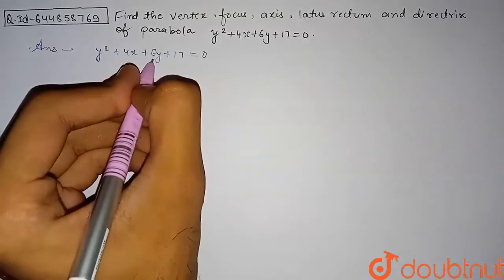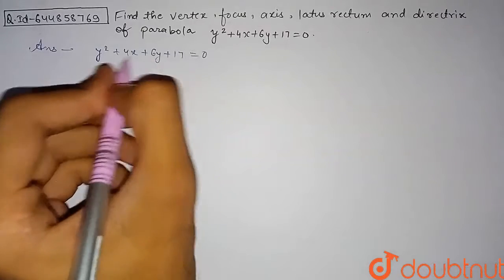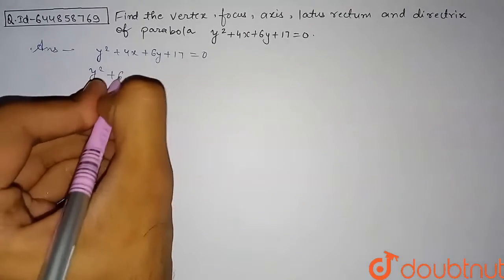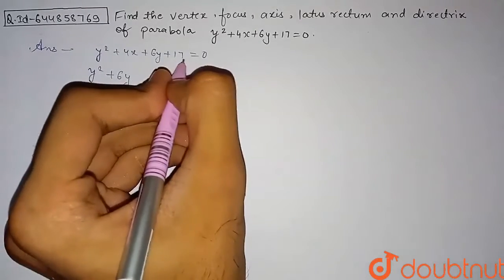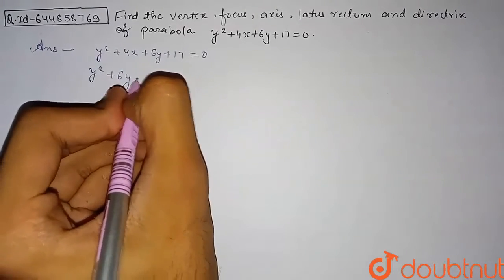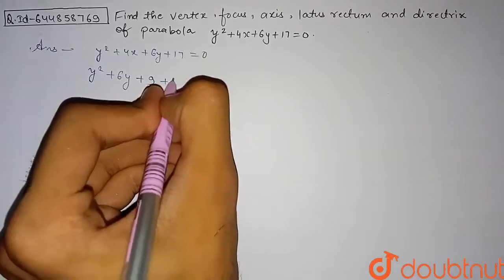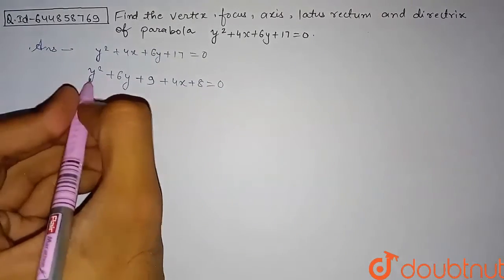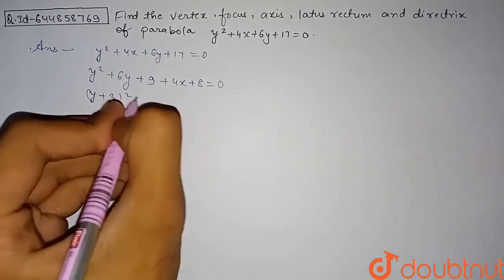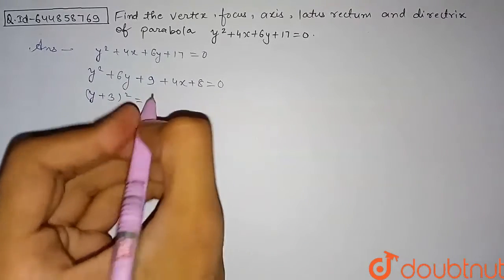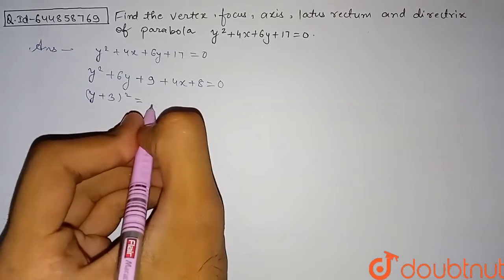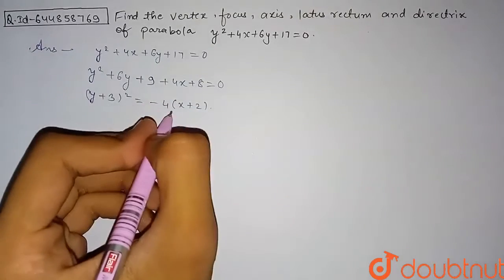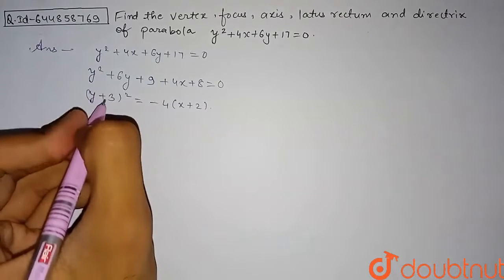We have y² and 6y, so we will complete the square. We write y² + 6y, then split 17 into 9 and 8, giving y² + 6y + 9 plus 4x + 8 = 0. This gives us (y + 3)², and taking 4x + 8 to the other side and factoring out 4, we get (y + 3)² = −4(x + 2).